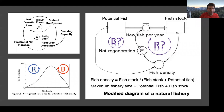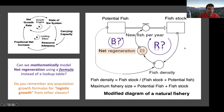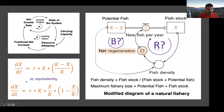Looking back at classes like SOS 101 where you may have discussed logistic growth processes, you might remember certain calculus-based formulas that represent logistic growth curves. In the standard formula, if x is the number of fish and r is the growth rate, then each fish has a certain intrinsic growth rate but is ultimately limited by carrying capacity k. With a little algebraic manipulation, we can turn this standard logistic growth formula into an alternative form.